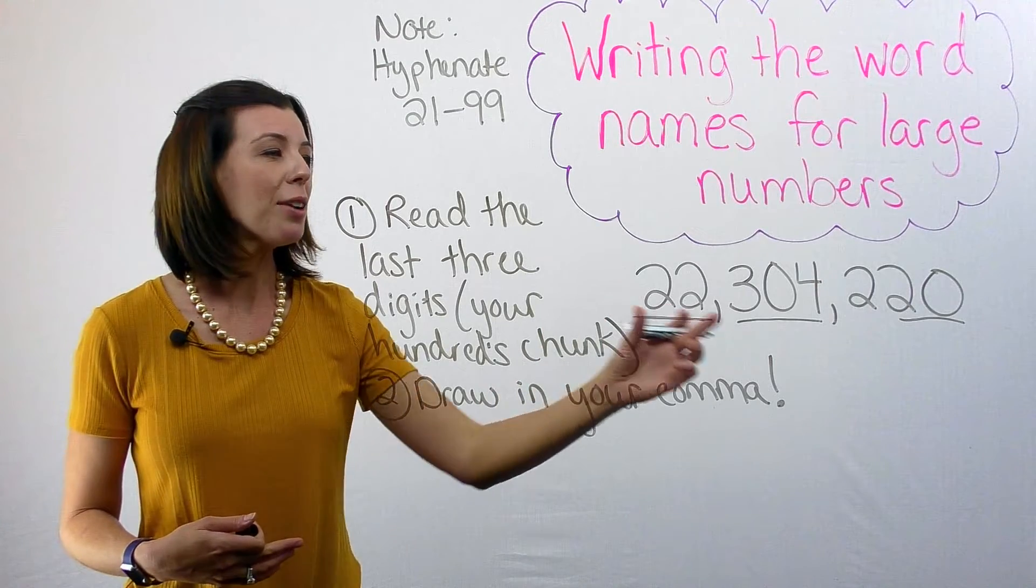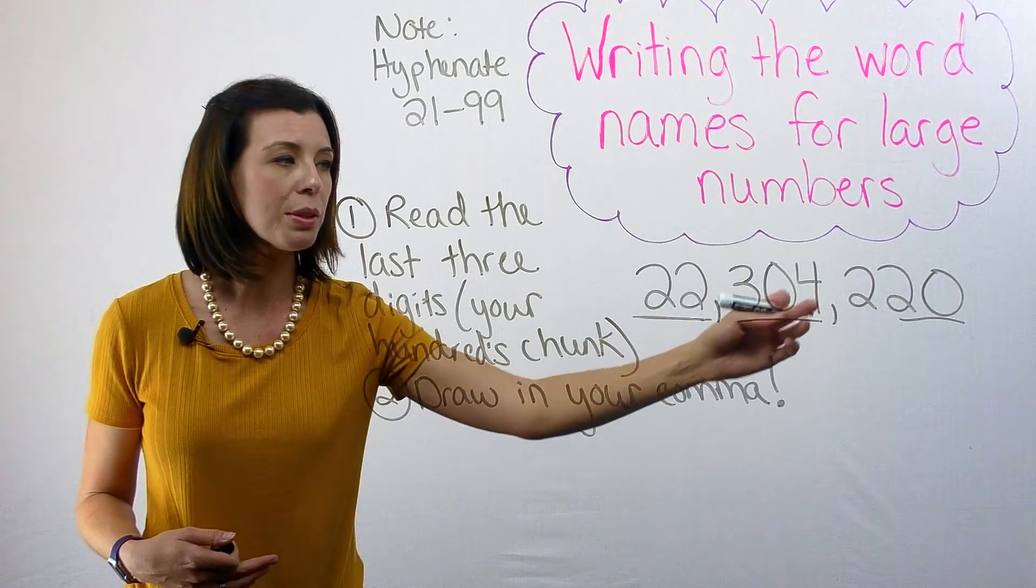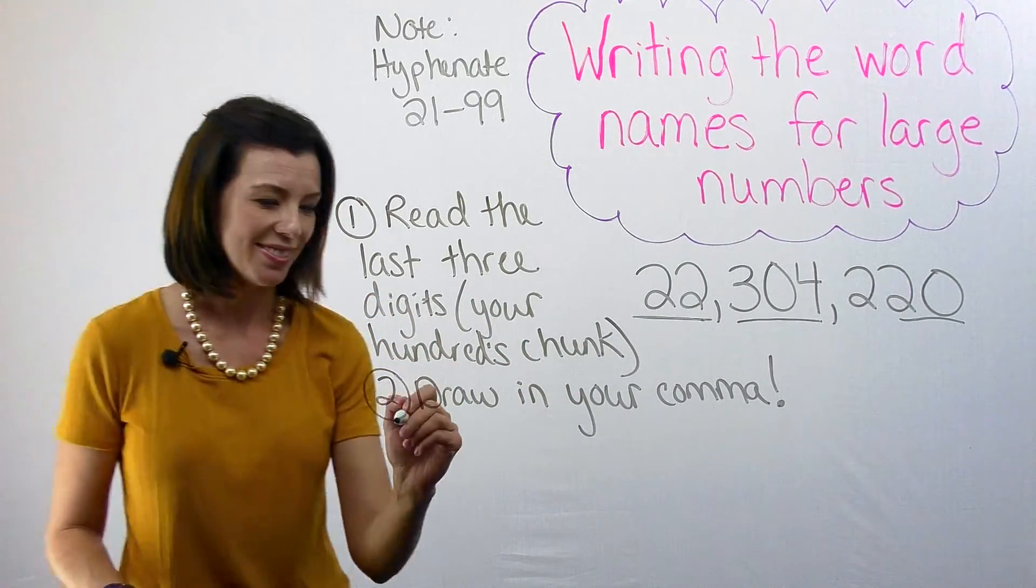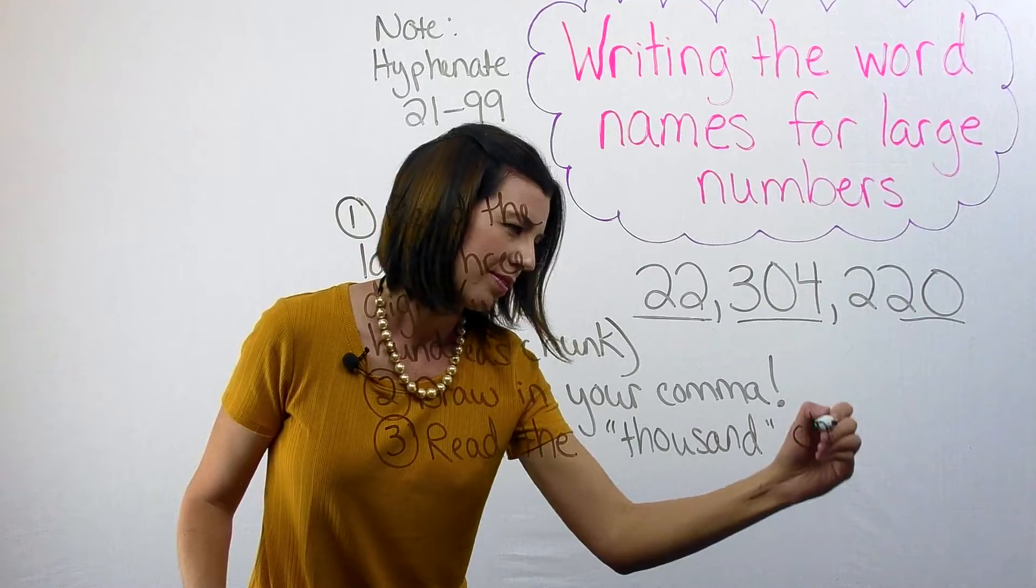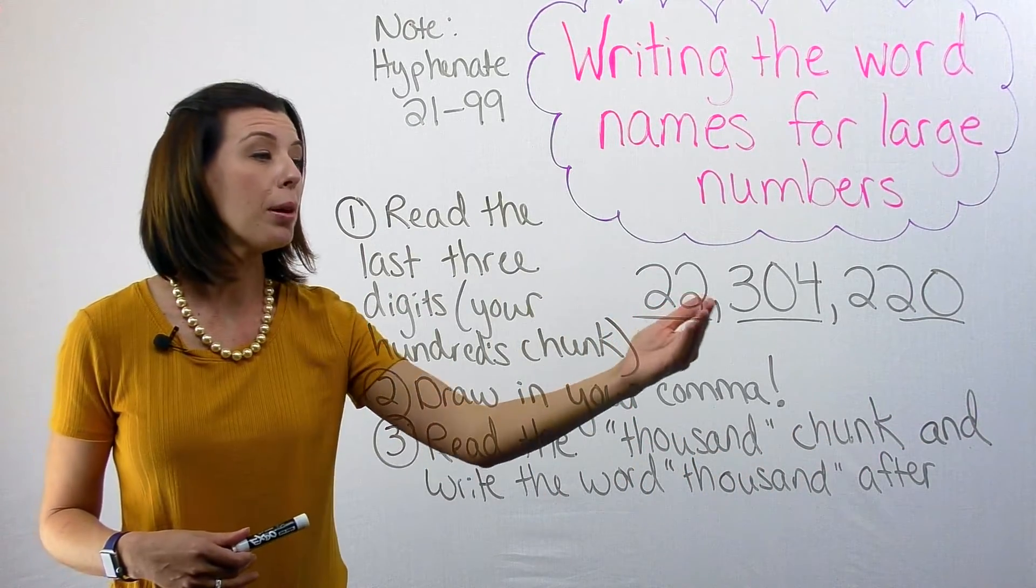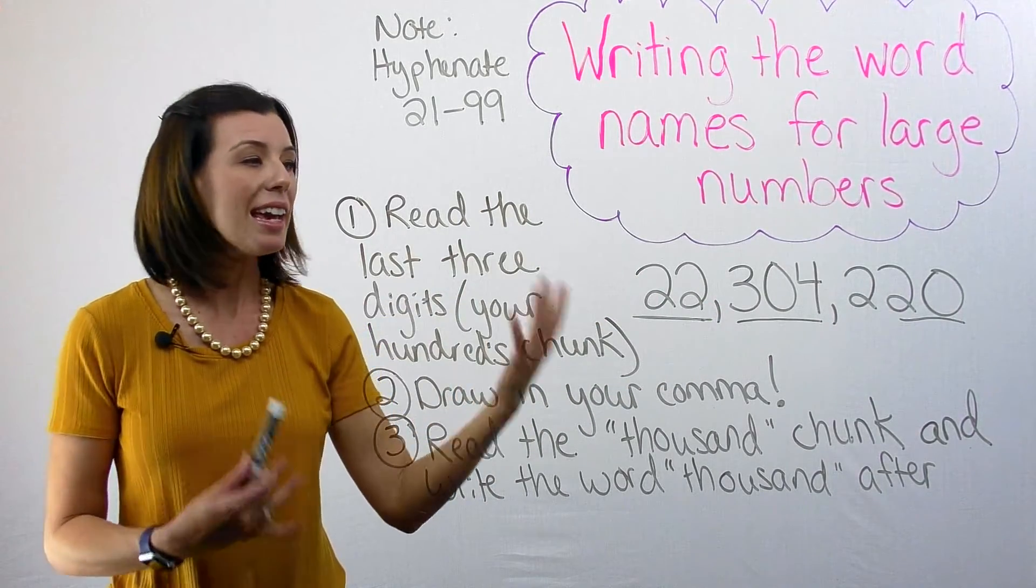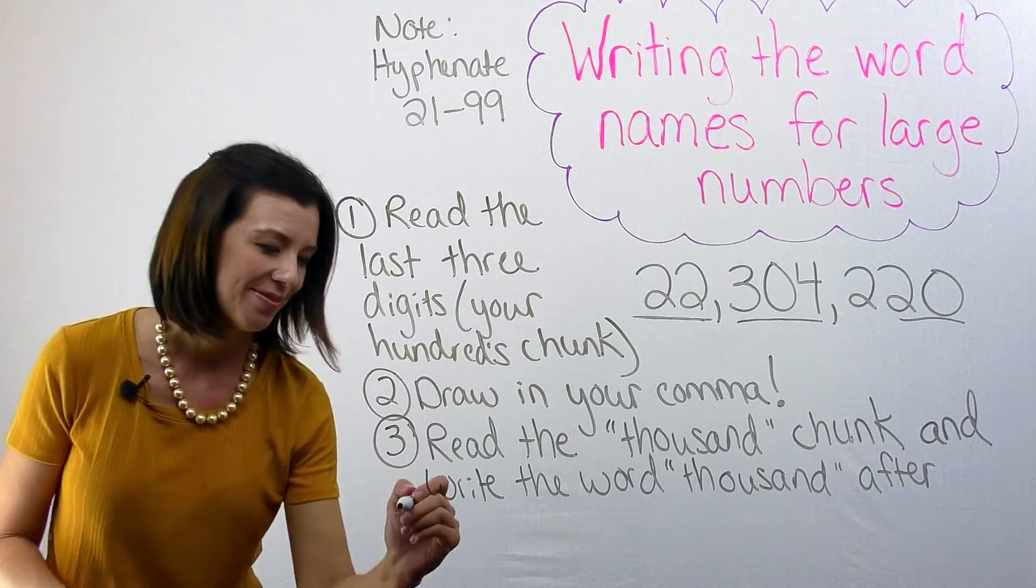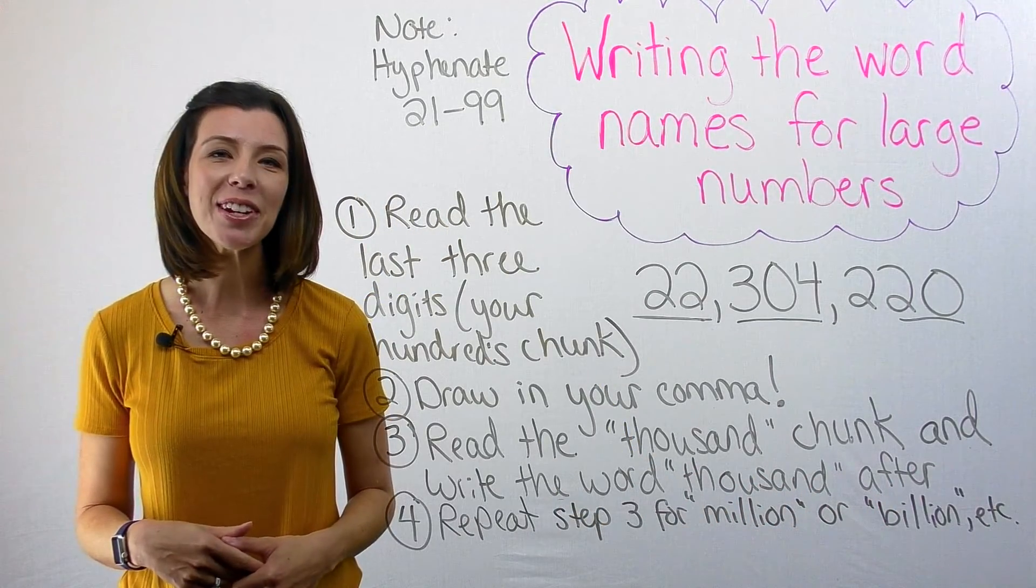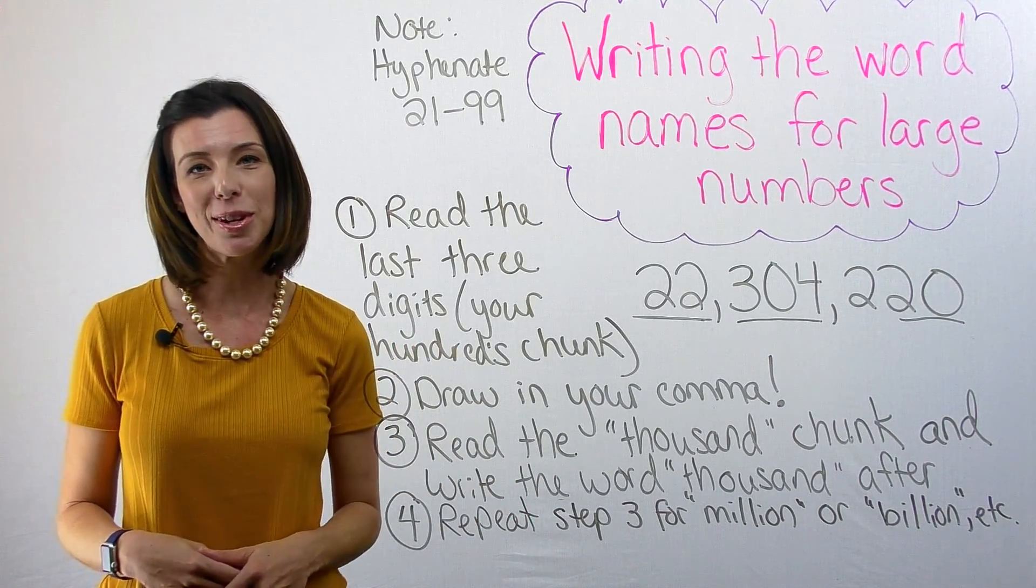So then I read the thousand chunk. And remember, I'm going to read this as a three digit number, but then tack on the word thousand afterwards. The last step is I need to put on my other comma and go to the millions chunk and so on, if I have a larger number. I hope you found this video helpful and you now have some strategies for how you write the word names for larger numbers.